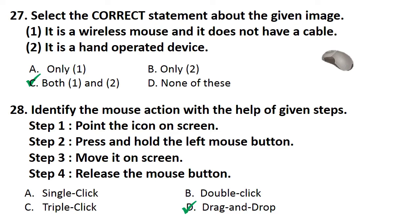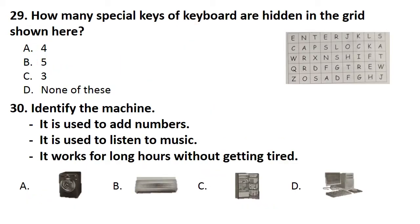How many special keys of keyboard are hidden in the grid shown here? Answer is option C, that is three. There are three special keys hidden in the given grid and they are enter, caps lock and shift.